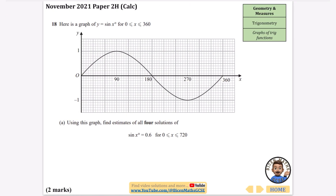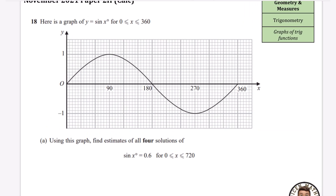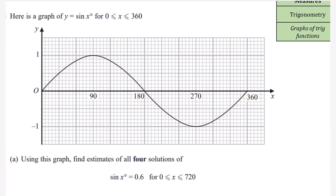This question shows a graph of y equals sin x and asks us to use the graph to find estimates for all four solutions of sin x equals 0.6. I did cover this in the transformations of graphs section, but we'll go through it again here since it belongs in this section. I want to find out when sin x equals 0.6, so 0.6 is going to be this horizontal line here.